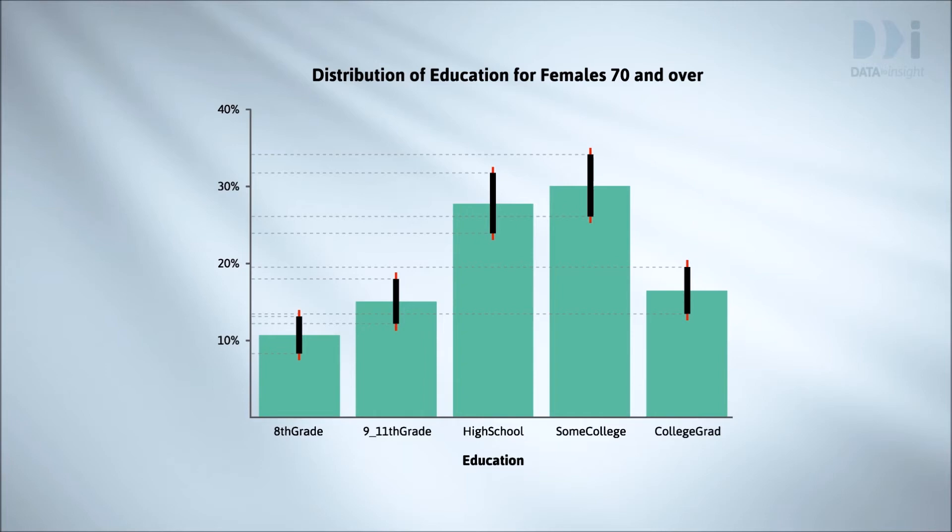For example, we can't tell for this subgroup which percentage is really bigger between 8th grade and 9 to 11th grade, or between high school and some college, or between 9 to 11th grade and college graduate.